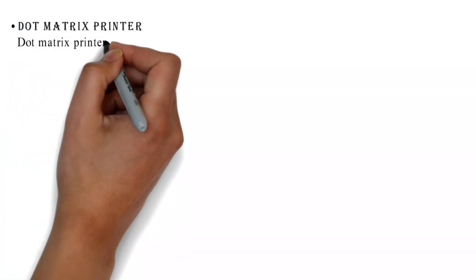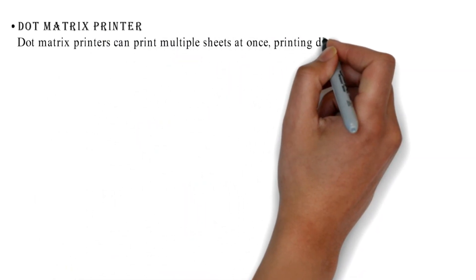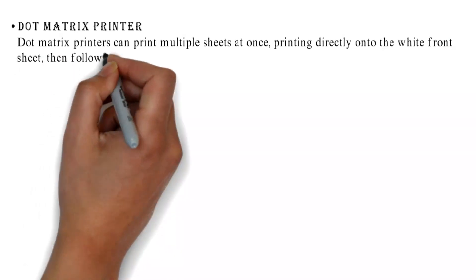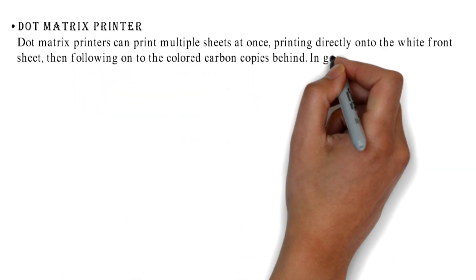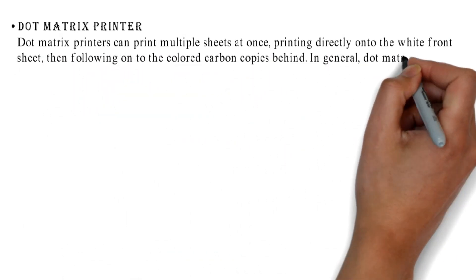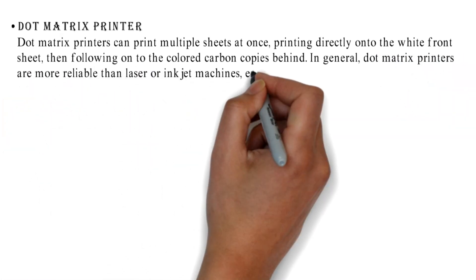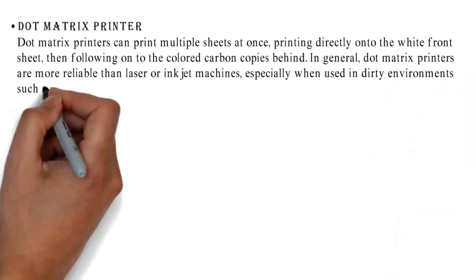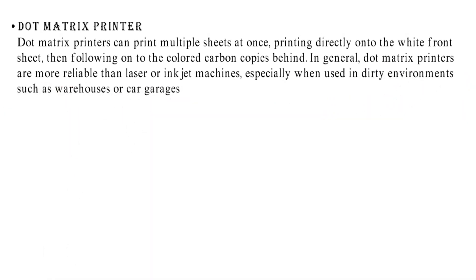Dot matrix printers can print multiple sheets at once, printing directly onto the white front sheet, then following onto the colored carbon copies behind. In general, dot matrix printers are more reliable than laser or inkjet machines, especially when used in dirty environments such as warehouses or car garages.